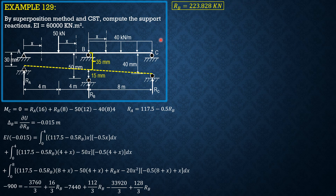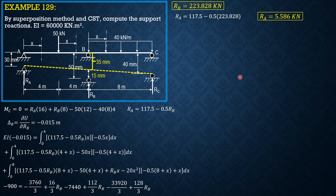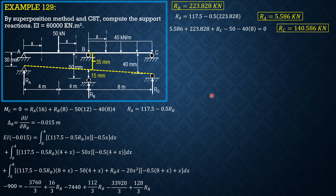Solving for RB gives 223.828 kilonewtons. Then RA = 117.5 minus 0.5 times 223.828. For RC: 0.5 times 223.828 plus RC minus 50 minus 40 times 8 equals 0, giving RC = 140.586 kilonewtons. This is actually the method of least work, where we combine the reaction at B so that the net deflection is 15 mm.